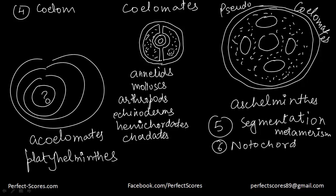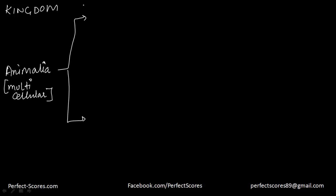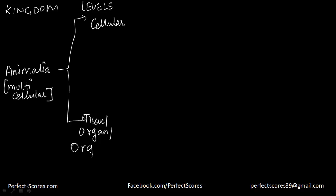So let's get started with the actual classification of animals. The broad classification is based on these six main features we have just discussed. The kingdom we are discussing is Animalia, which consists of all multicellular organisms. The levels of organization are two: one is at a cellular level, and the other is at a tissue, organ, or organ system level.